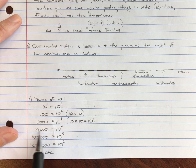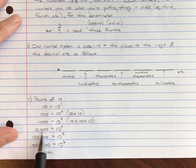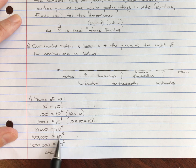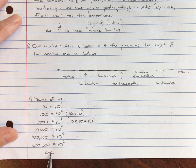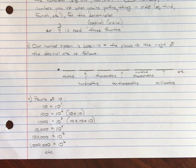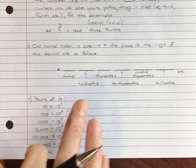The number ten thousand, which has four zeros, is ten to the fourth. One hundred thousand is ten to the fifth. One million is ten to the sixth, and so on. So we know a number of things that can help us with this.